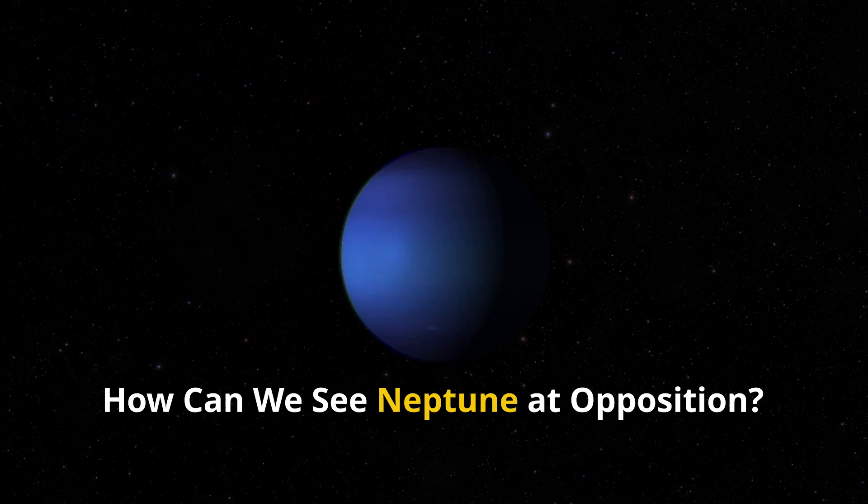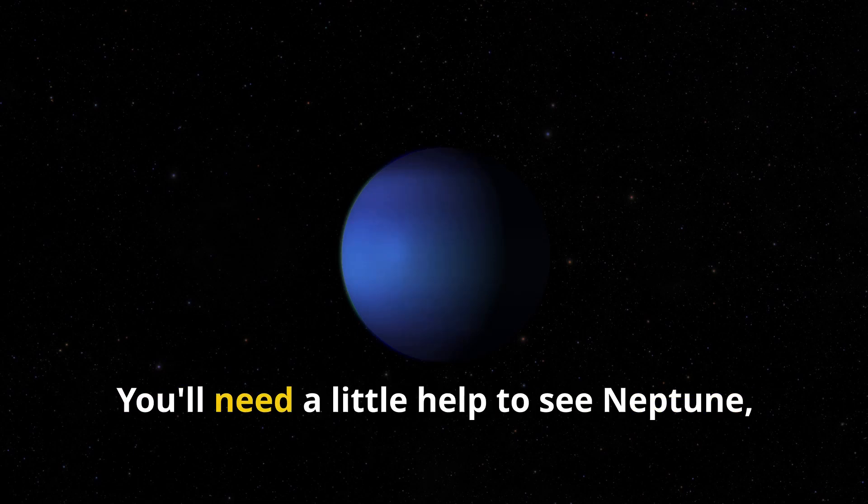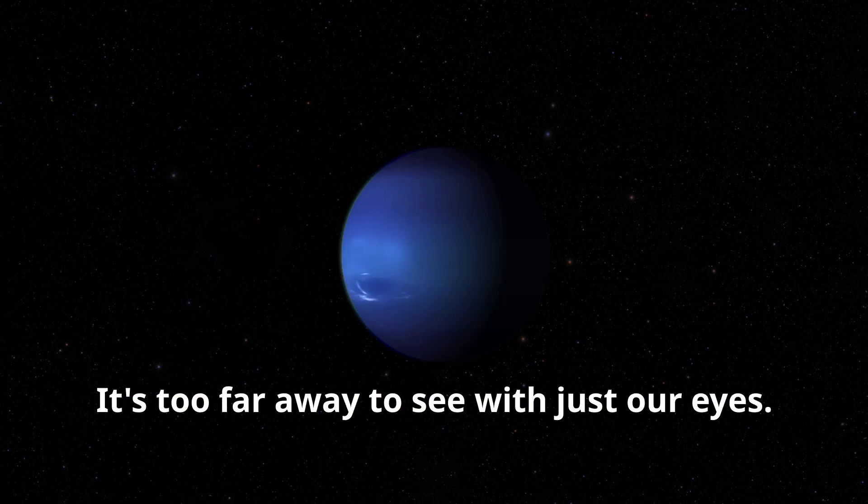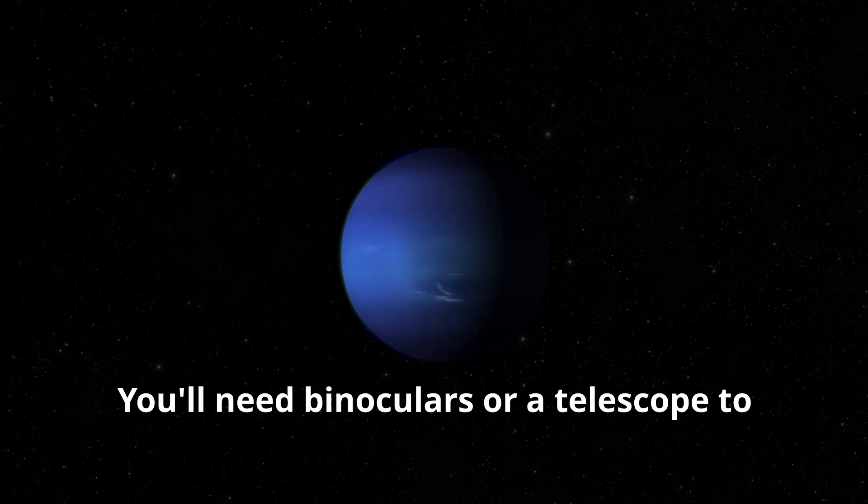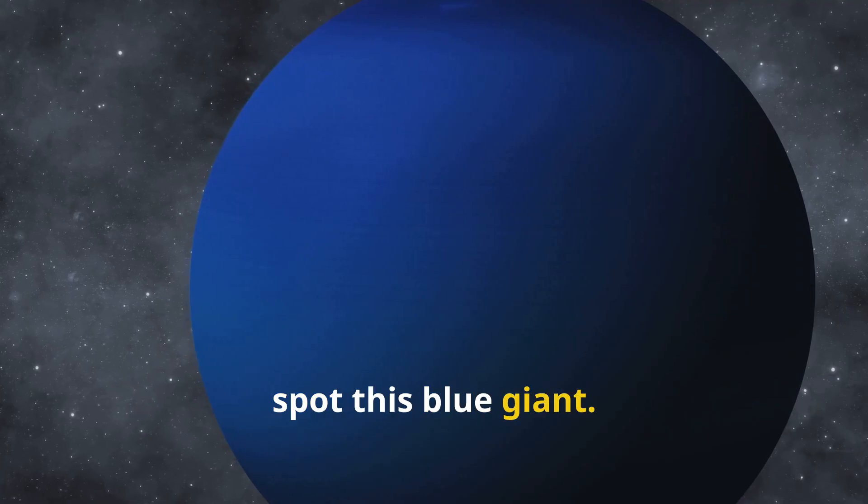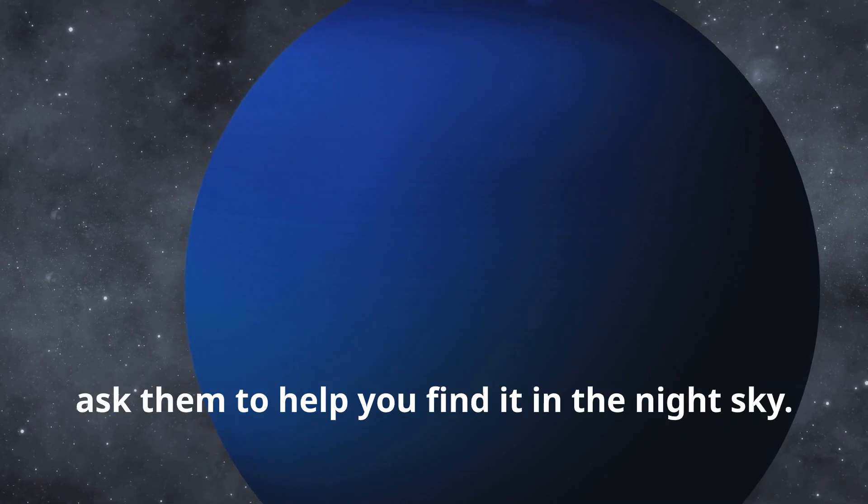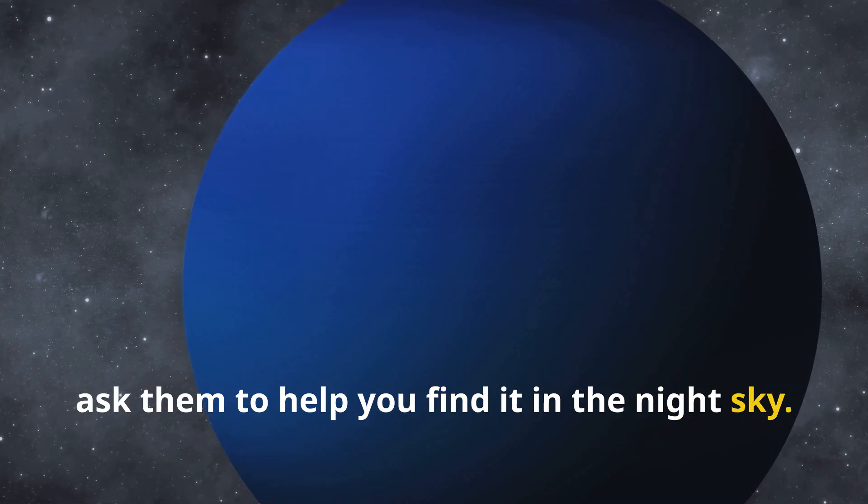How can we see Neptune at opposition? You'll need a little help to see Neptune. Even when it's at opposition, it's too far away to see with just our eyes. You'll need binoculars or a telescope to spot this blue giant. If you have a grown-up who knows about astronomy, ask them to help you find it in the night sky.